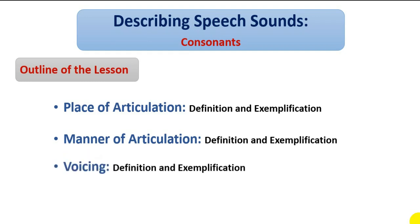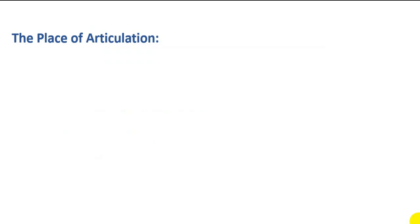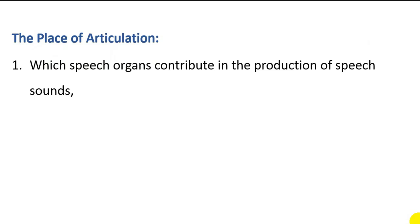Let's start with the place of articulation. When describing consonants in terms of their place of articulation, there are three main points to consider: which speech organs contribute to the production of speech sounds, where production takes place, and what speech organs come into contact to produce speech sounds.